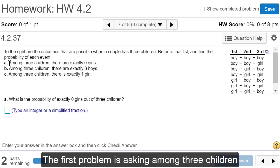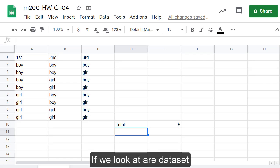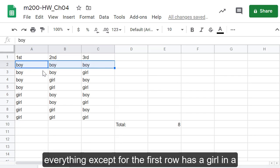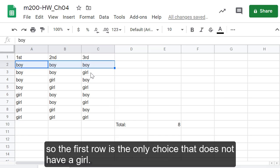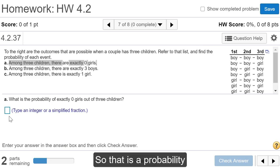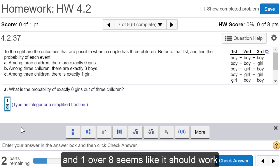The first problem is asking among three children what's the probability that we get exactly zero girls. So the first row is the only choice that does not have a girl. So this would be one out of eight possibilities. So that is our probability. They want us to type an integer or simplified fraction and one over eight seems like it should work.